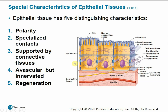Fourth, epithelial tissue is avascular but innervated — it does not have its own blood vessels. Blood vessels are within the connective tissue below, and epithelial gets its nutrients via diffusion. However, it is innervated, so there are nerve endings that make contact with the epithelial cells. Fifth, epithelial tissue is capable of regeneration. If you get a cut on your skin it will regenerate and heal itself, whereas other tissue types may not regenerate as efficiently or at all.